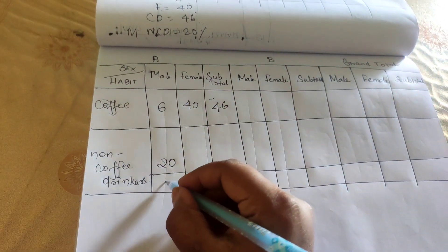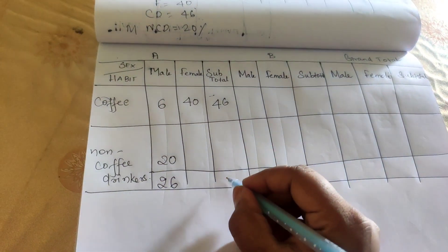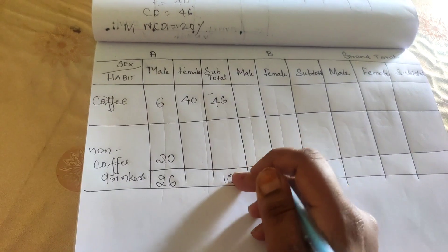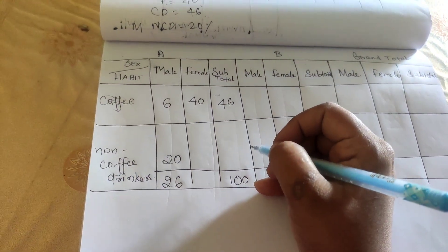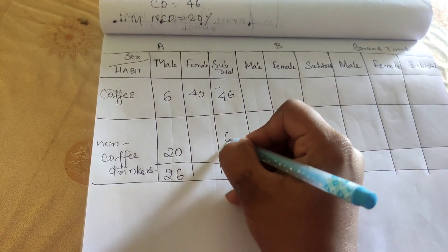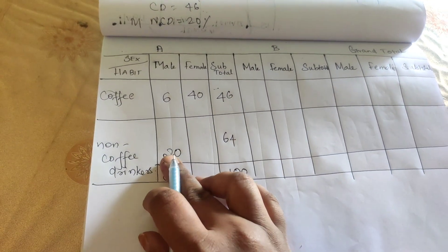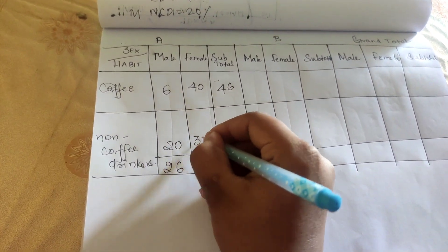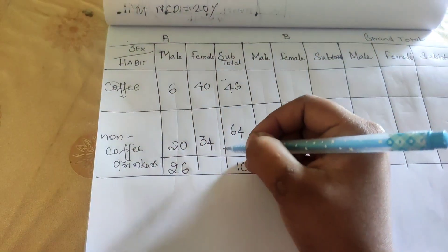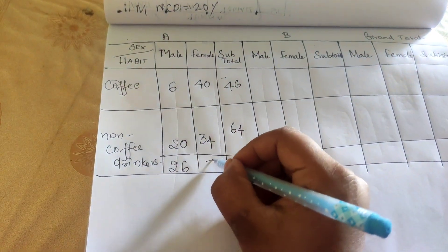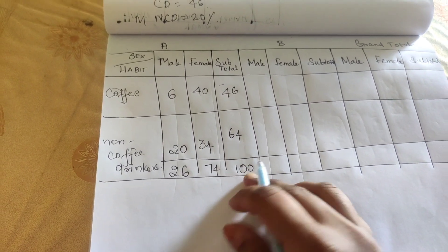For Town A, the subtotal is 26 for males overall. The non-coffee drinker total is: 100 minus 46 gives 64, and 64 minus 20 gives 44, so 34. Adding 40 plus 34 gives 74, and we get 100 for the Town A grand total. Now for Town B, males overall are 55, and the rest, 45, are females.